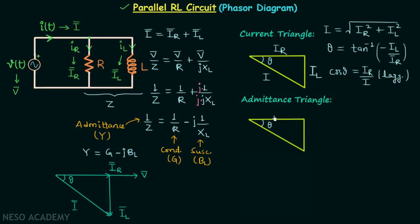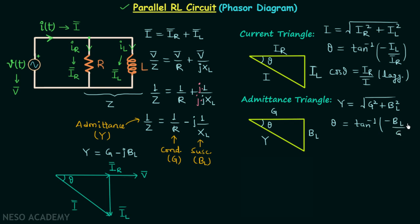Moving on to the admittance triangle: one side is conductance G, one side is inductive susceptance BL, and the hypotenuse is admittance Y. Admittance equals the square root of conductance squared plus susceptance squared. The power factor angle theta equals tan inverse of negative BL divided by G, and the power factor cos theta equals conductance divided by admittance, and it will be lagging.